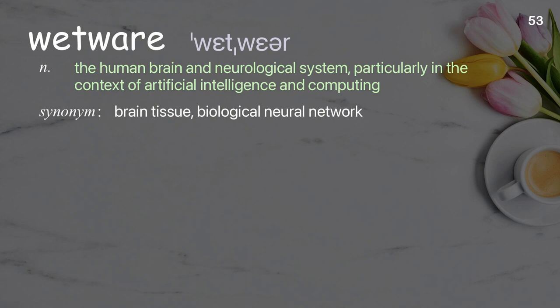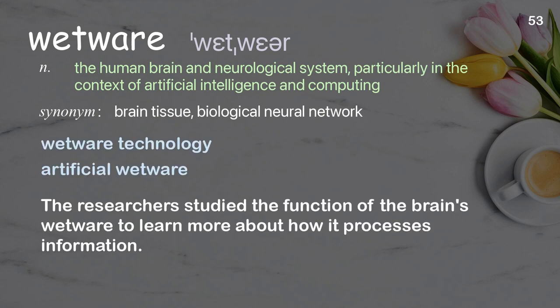Wetware: the human brain and neurological system, particularly in the context of artificial intelligence and computing. The researcher studied the function of the brain's wetware to learn more about how it processes information.